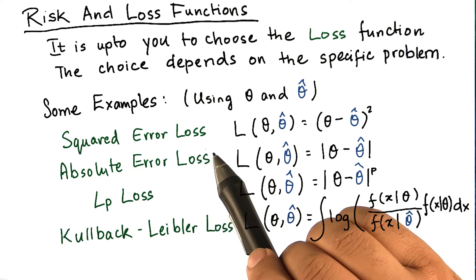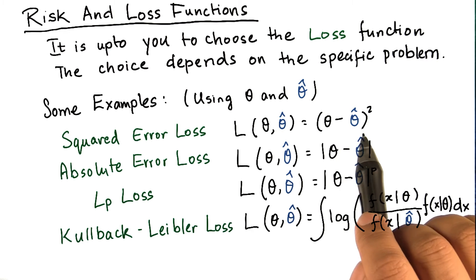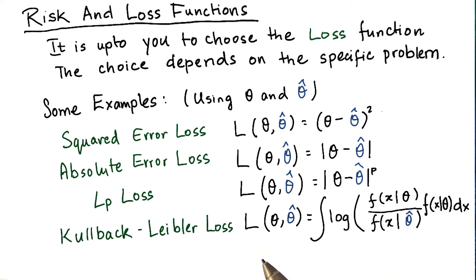One example is the squared error loss. In this case, you take the difference between theta and theta hat and square them. Another is the absolute error loss.